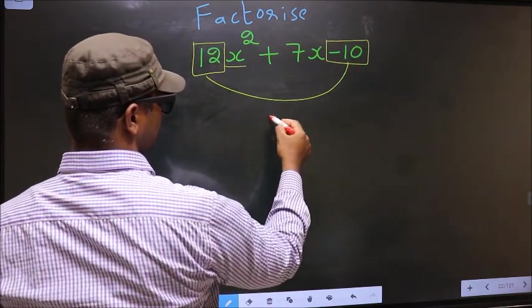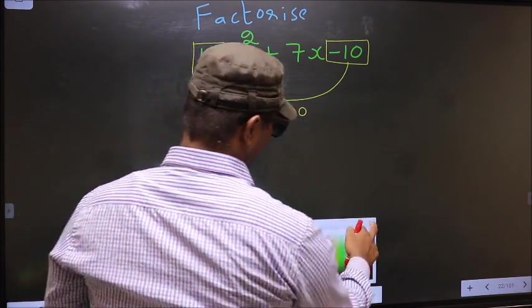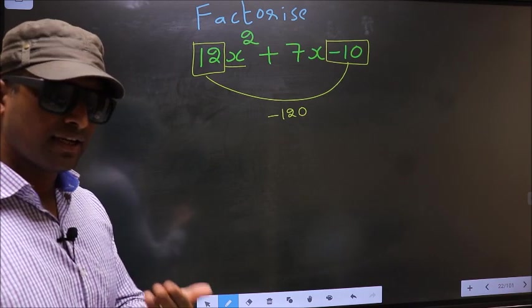So 12 into minus 10 is minus 120. This is your step 1. Next.